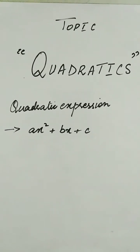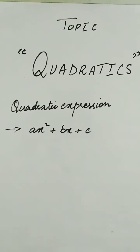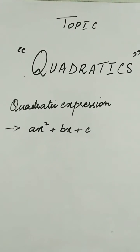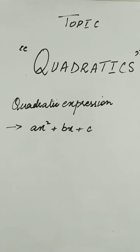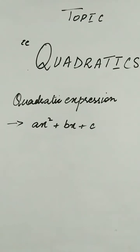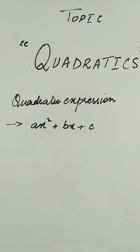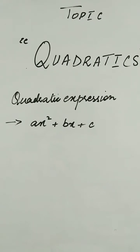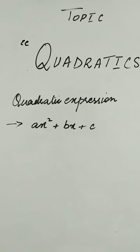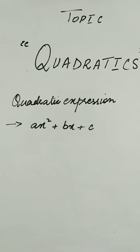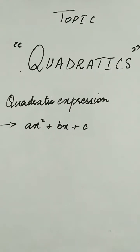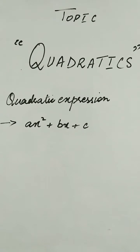Under this topic, we cover quadratic expressions of the form Ax² + Bx + C. Moreover, we learn about how to locate the vertex and axis of symmetry, how to convert this expression into a complete square form, and how to solve quadratic equations. Now let's start solving some questions.